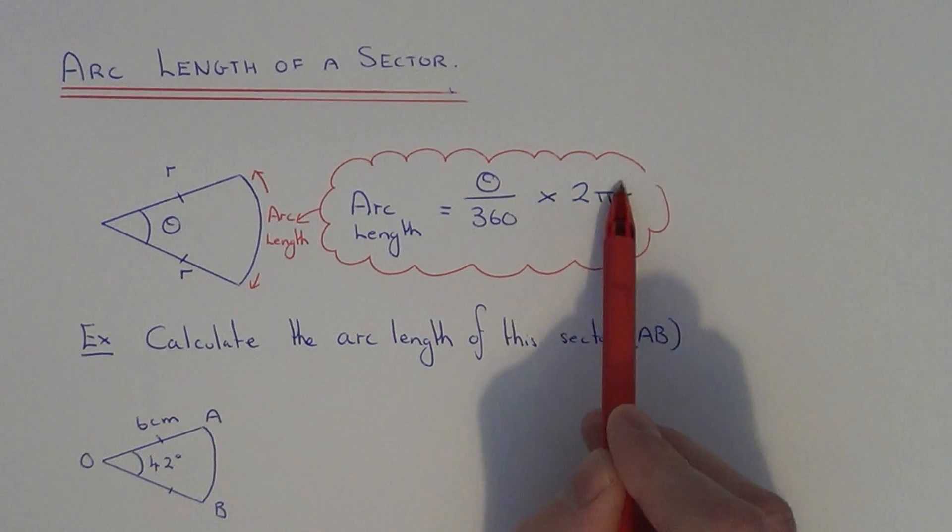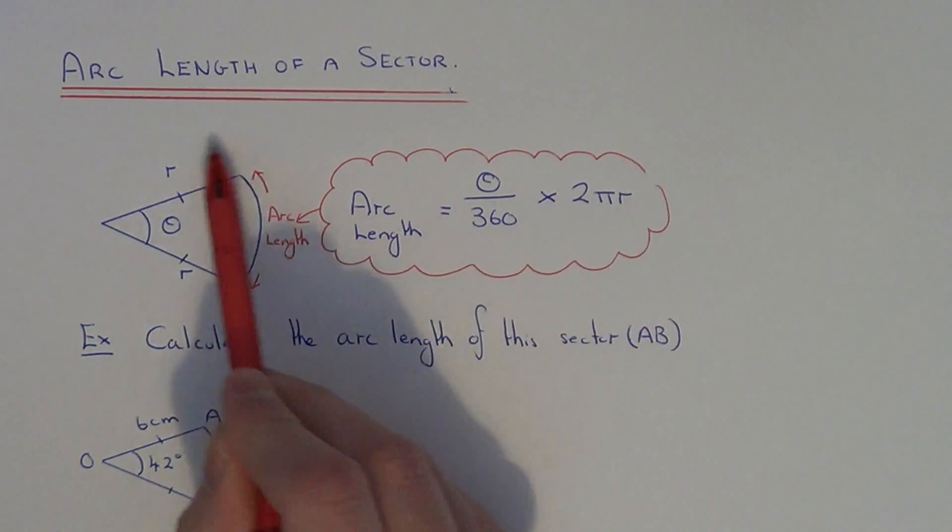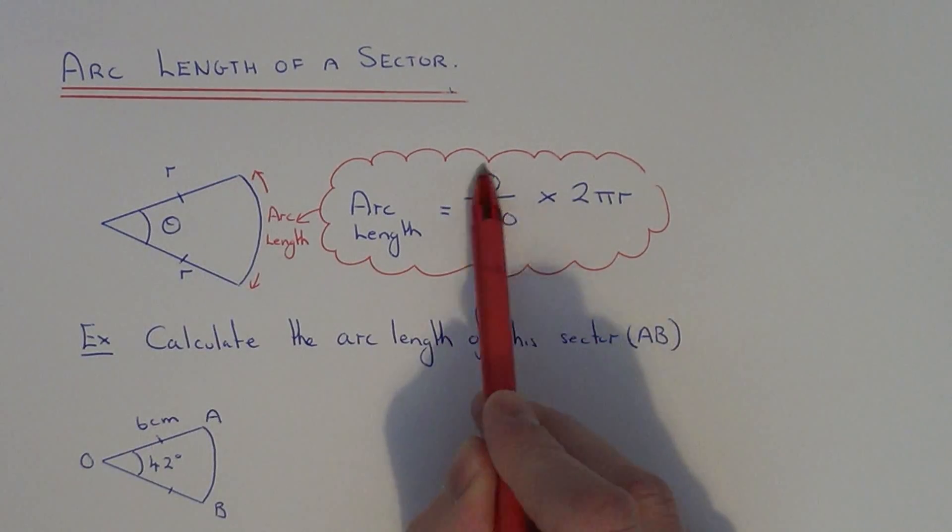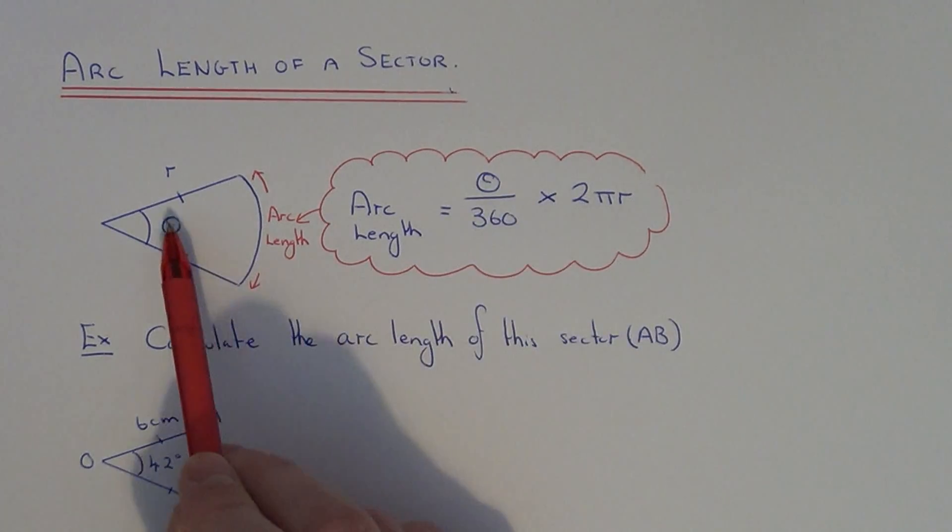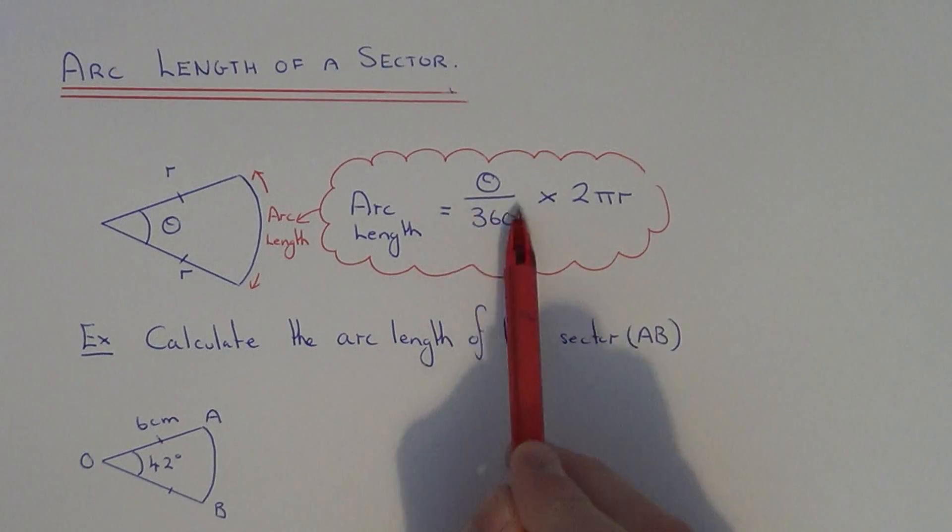This bit of the formula is the circumference of the whole circle, and this bit here, the theta over 360, is giving us the fraction of the whole circle which we have.